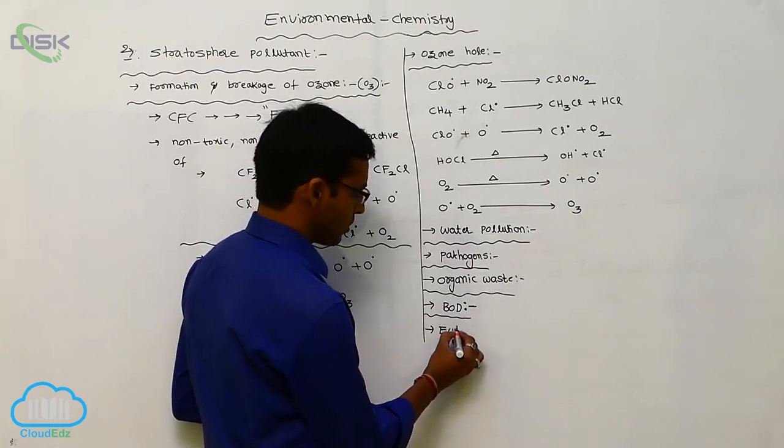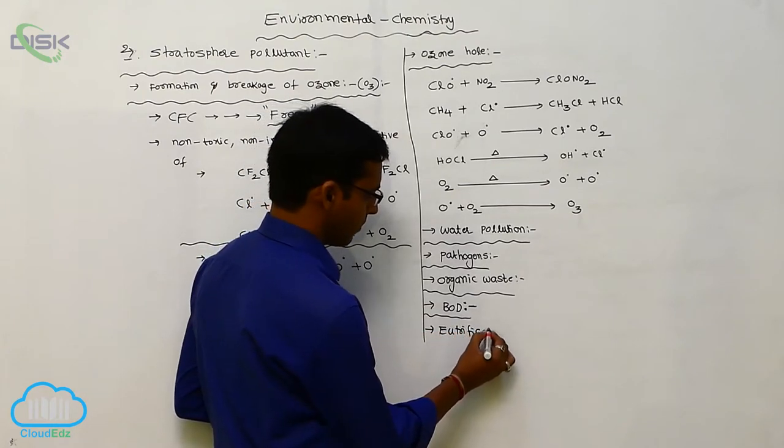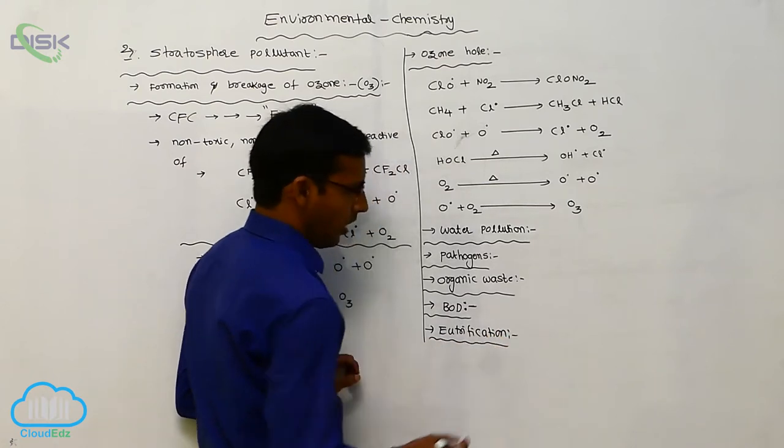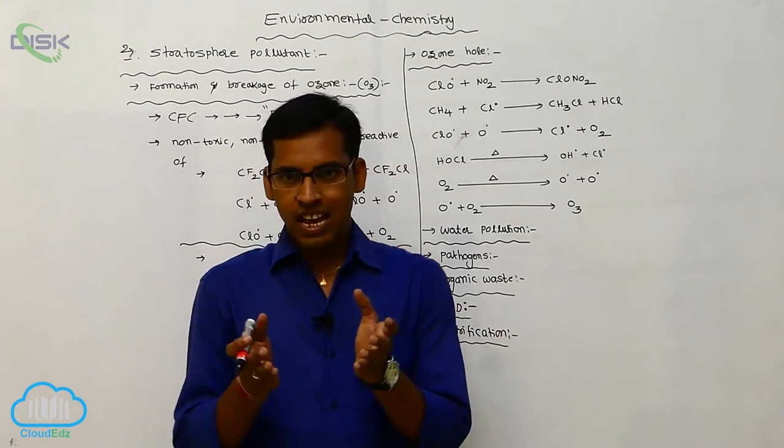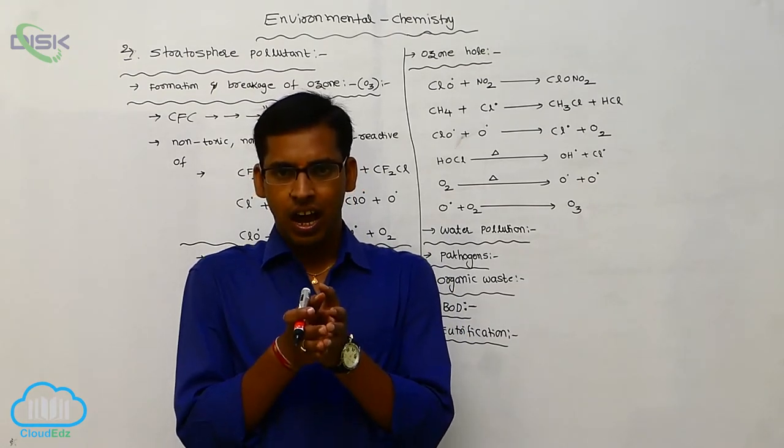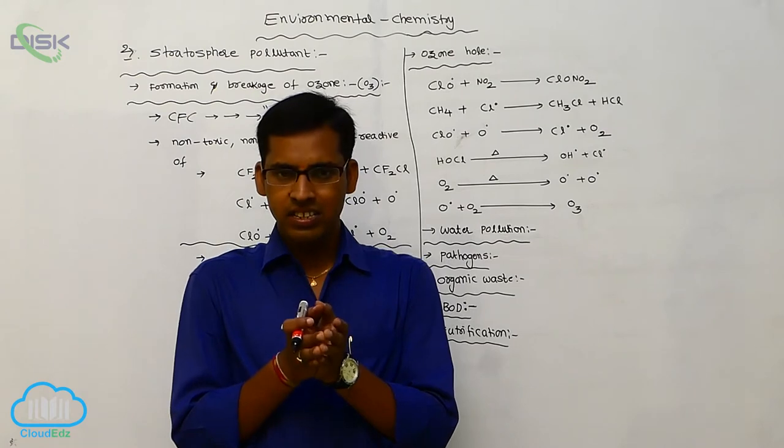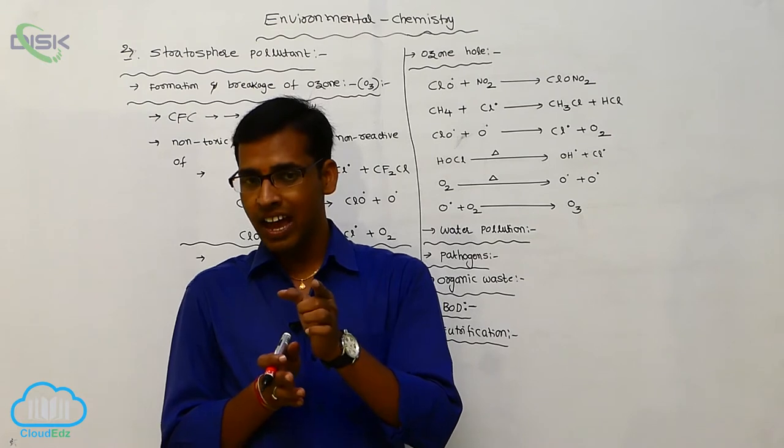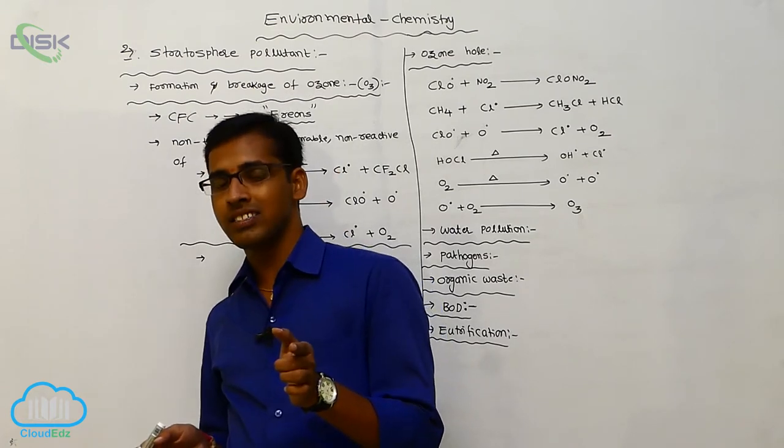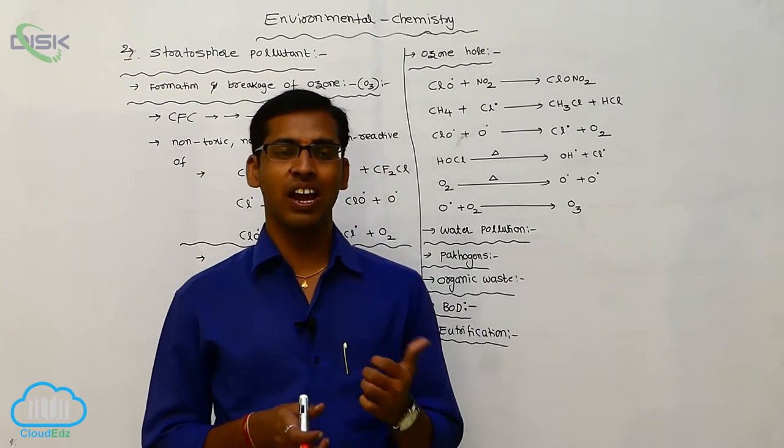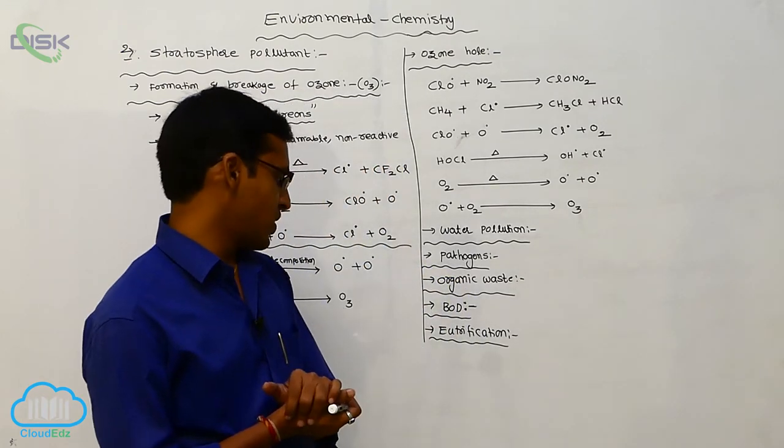It is called as eutrophication. Eutrophication means the substance having more nutrients or enriched nutrients are present. Those enriched nutrients are suitable for the growth of plants and killing of animals. The loss of biodiversity is called as eutrophication process.